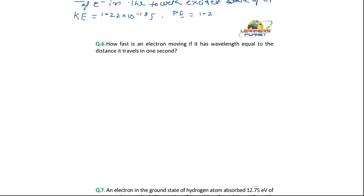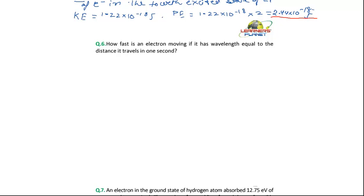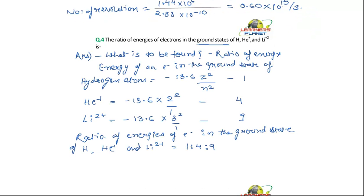So potential energy is equal to 1.22 × 10⁻¹⁸ × 2, which gives 2.44 × 10⁻¹⁸ joules. So the potential energy of the electron in the fourth excited state is 2.44 × 10⁻¹⁸ joules. That is your answer.